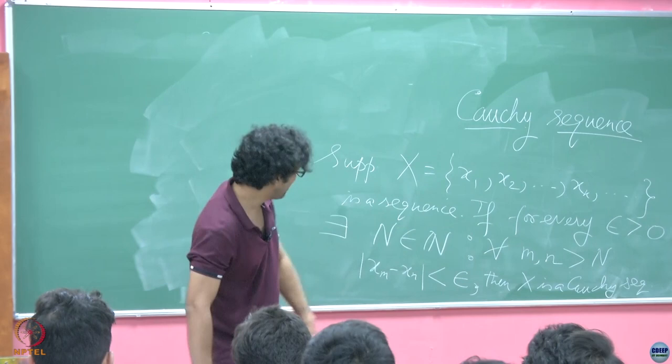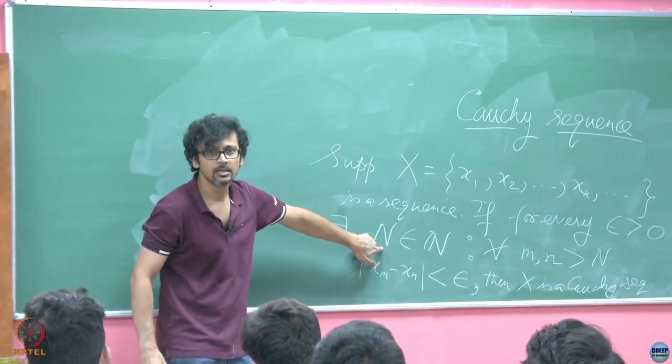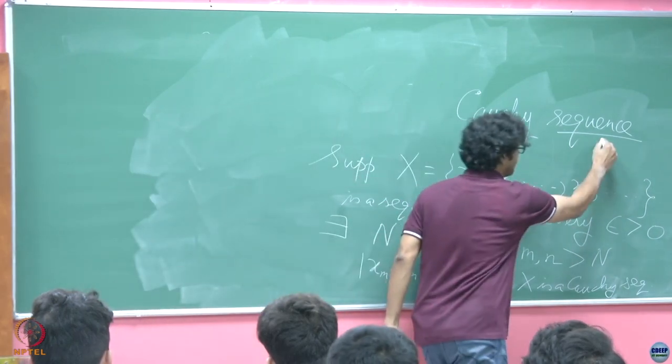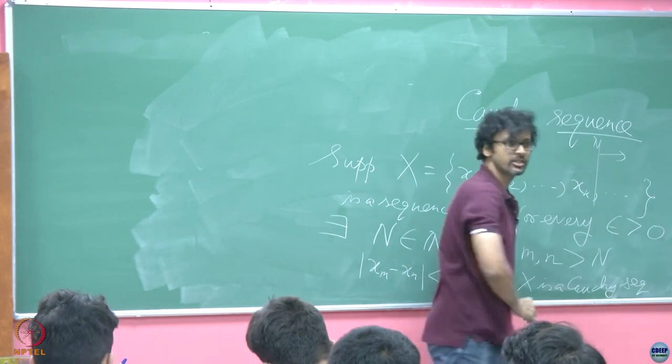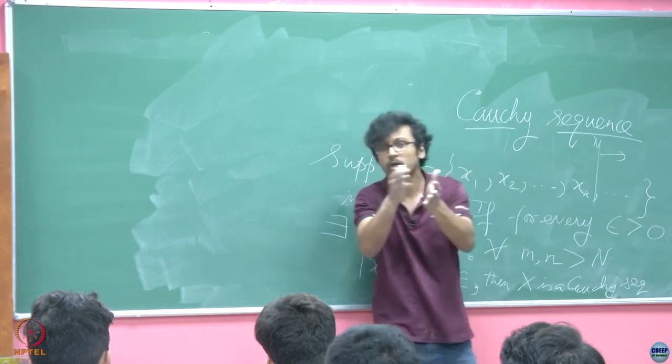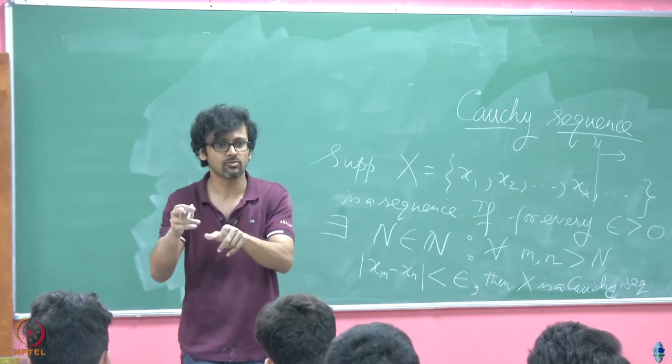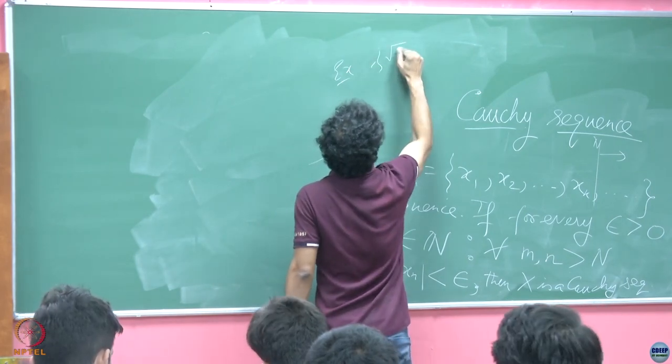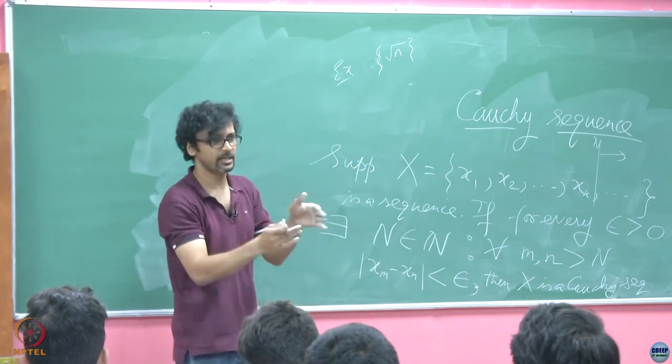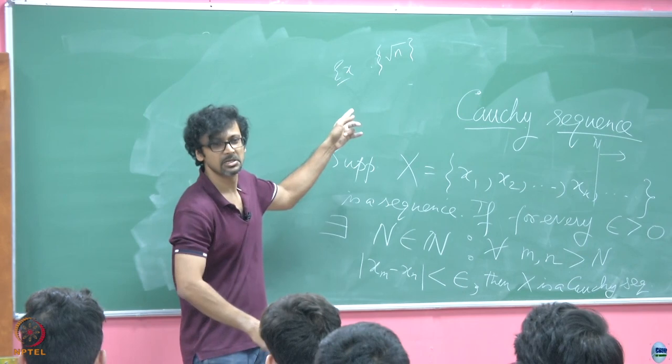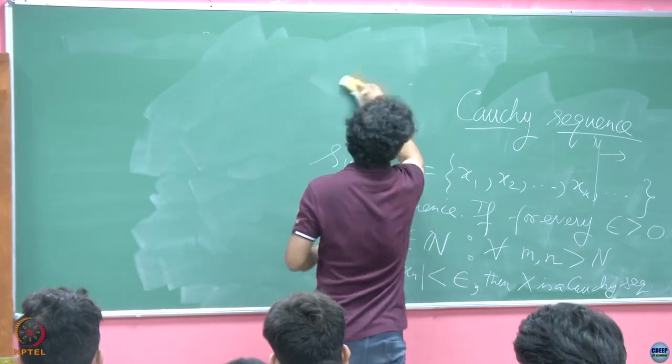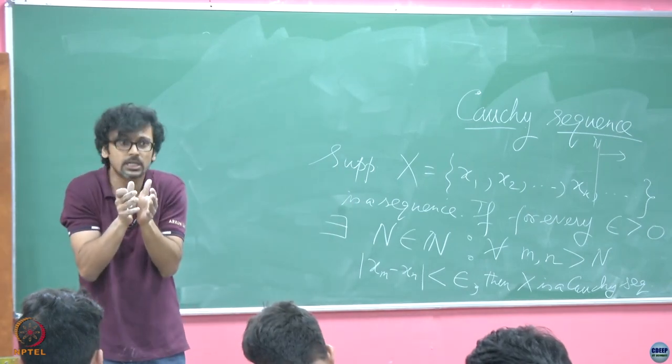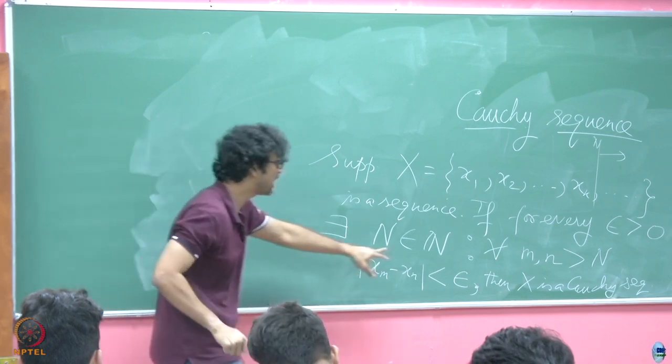I always try to view these things like a game of cards, so it is like two players playing. One player throws in an epsilon. If I have to trump that card, I have to find my trump card in the form of N, so that I can find a point in the sequence somewhere, which is this big N, to the right of which, it does not matter which two terms I pick. This is very important. It is not two consecutive terms, remember. It is not x_m and x_{m+1}. In fact, you can actually take as an exercise, a sequence like this, where you will see that each consecutive term, the difference gets small. But this is not Cauchy, you can check.